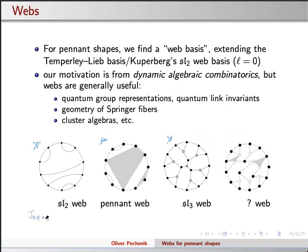If you look at a link diagram and you zoom in on it, a little neighborhood of it is going to look basically like a matching. So you can use the sort of diagrammatics to expand that and obtain an invariant. You can do something analogous in the SL3 case — you get some kind of Kuperberg invariant, some kind of SL3 quantum link invariant.